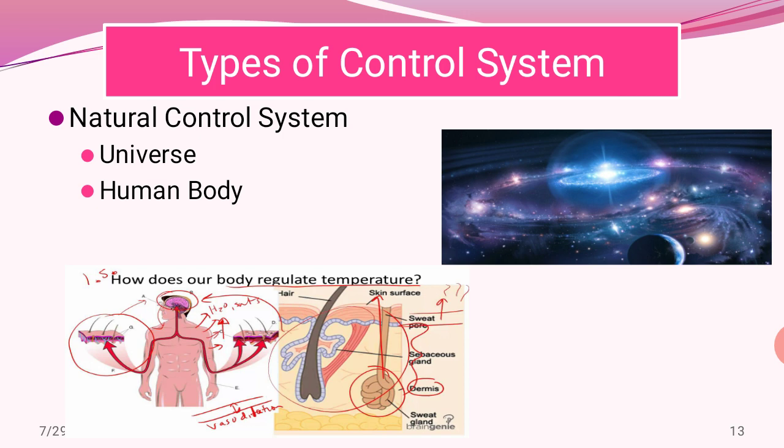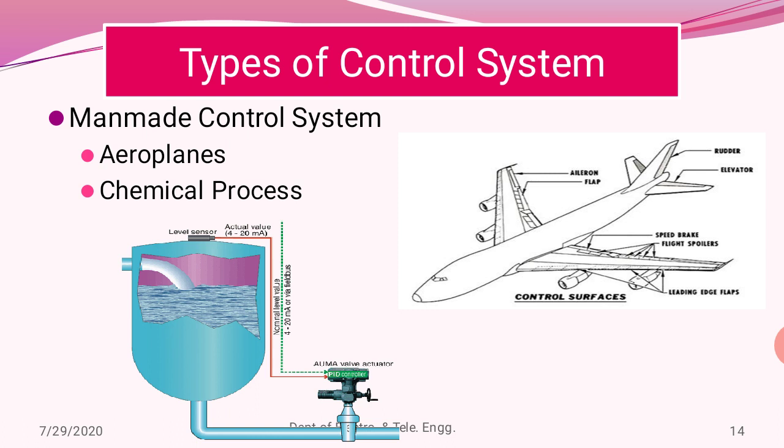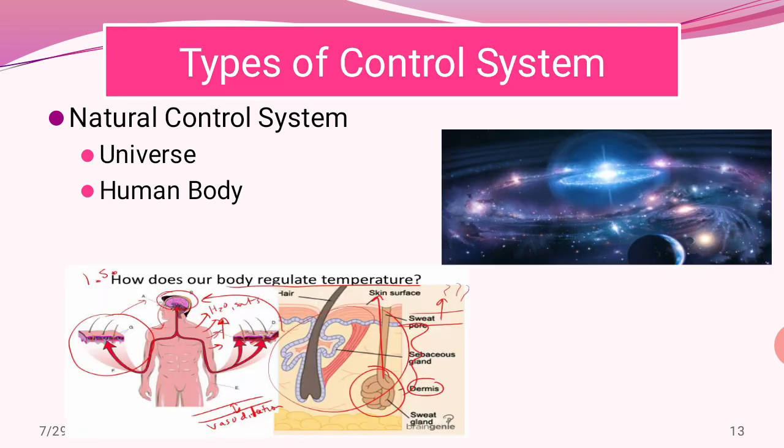Now we will look into types of control systems. Types of control systems can be broadly classified depending upon various factors. Firstly, based on availability, we have natural control systems and man-made control systems. Natural control systems are natural in nature, whereas man-made control systems are manufactured or designed by humans as per the required specification or recommended levels.